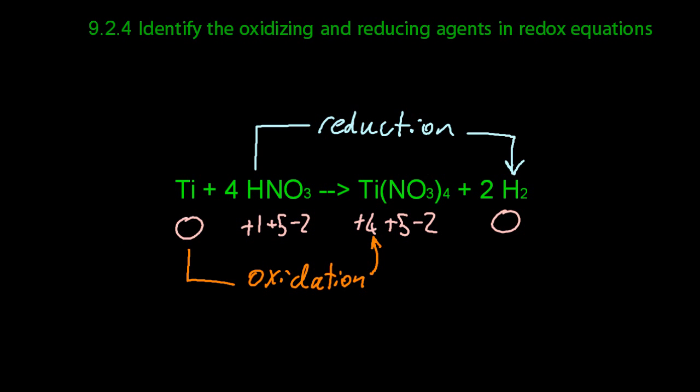And for the third example, the oxidation arrow starts with titanium, so that's reducing agent. And the reducing arrow starts with nitric acid, so that's the oxidising agent.